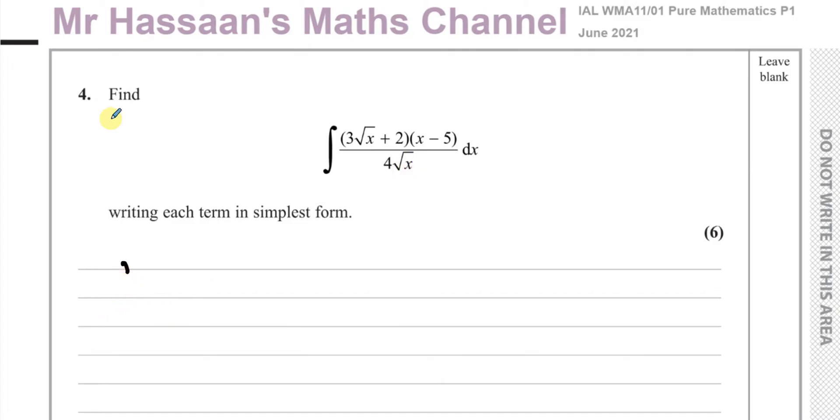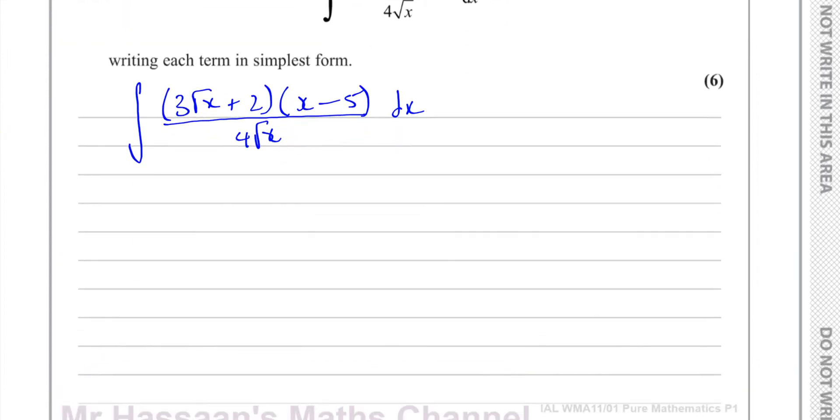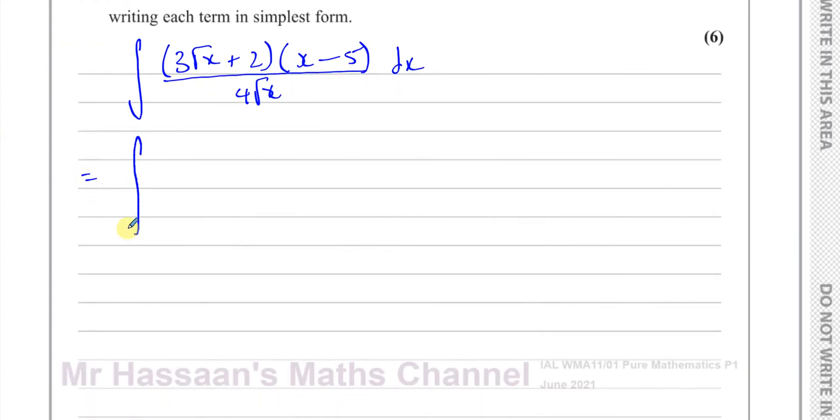So basically what I can do is I can say this is the integral of 3 root x plus 2 times x minus 5 over 4 root x with respect to x. Now what I'm going to do is I'm going to write this in index form. So I'll write this as 3x to the power of a half plus 2 times x minus 5 all over 4x to the power of a half.